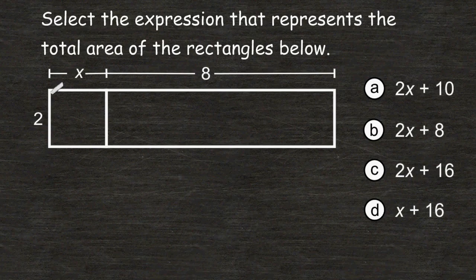The length of the smaller rectangle is 2, and the width is x, so when we multiply those two values together, we get 2x.